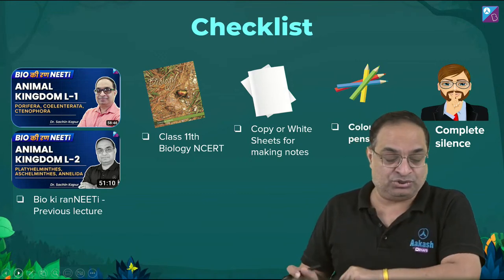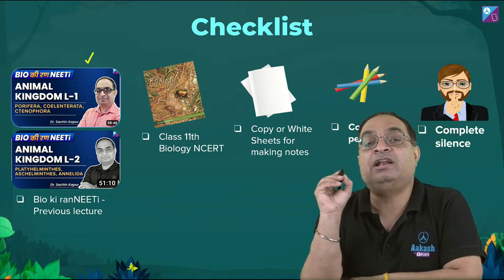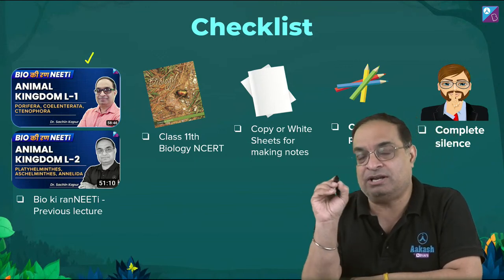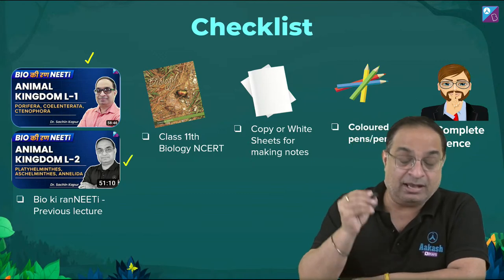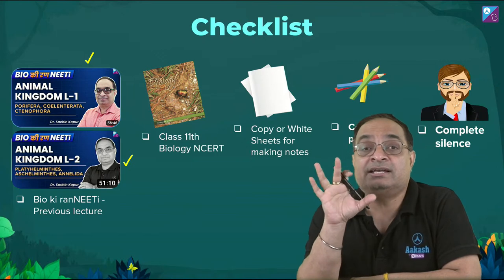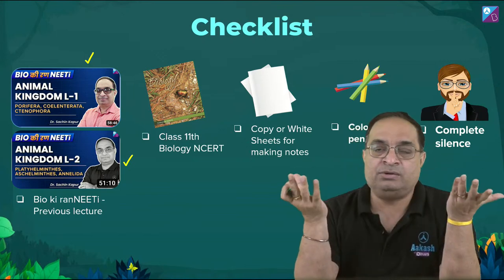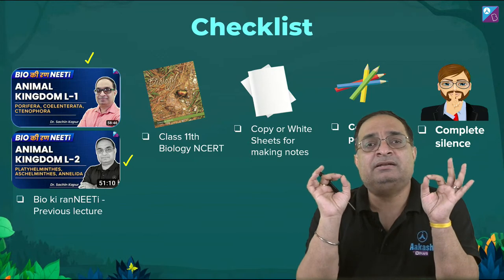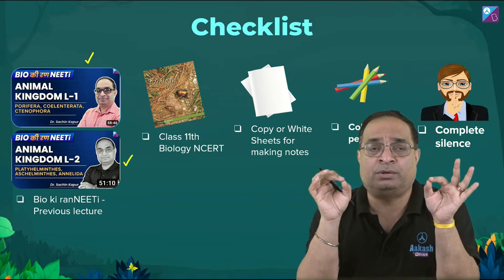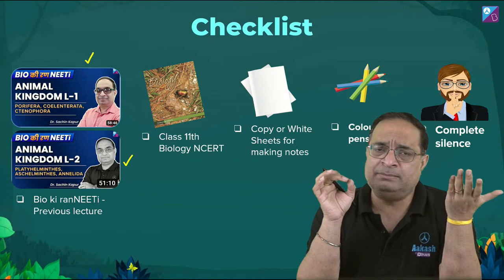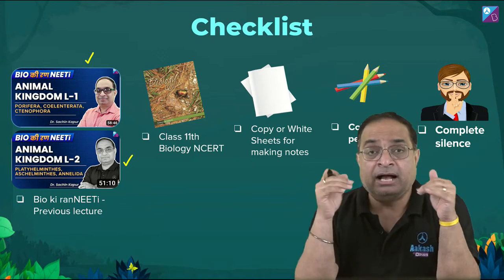The important checklist: you have to complete the Animal Kingdom L1 session and Animal Kingdom L2 session. If you haven't done them, check the playlist on the channel — the videos are available. In the Animal Kingdom, we have already covered Phylum Porifera, Cnidaria, Ctenophora, Platyhelminthes, Aschelminthes, and Annelida in previous sessions.